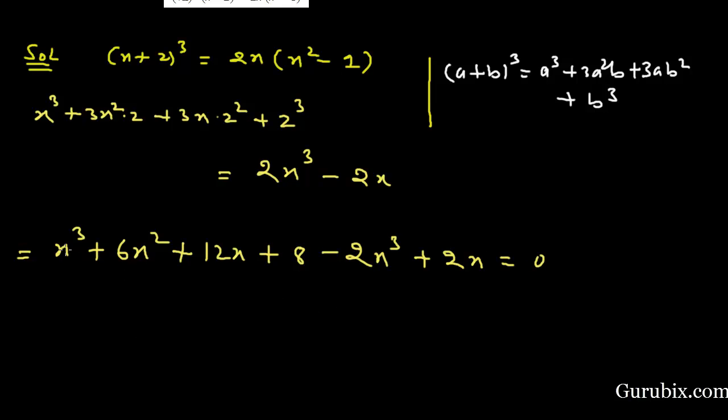And we can subtract x³ from -2x³. Then we have -x³ + 6x². Here is 2x plus 12x, this means 14x + 8 = 0.